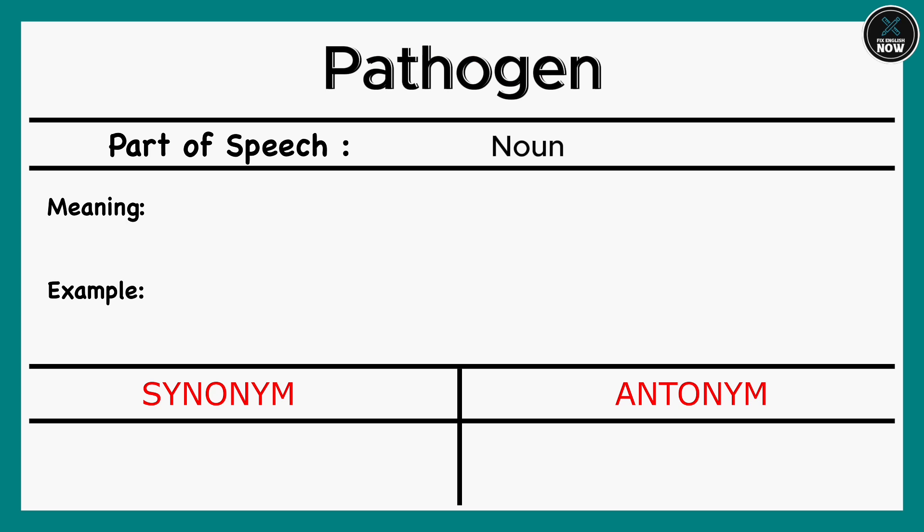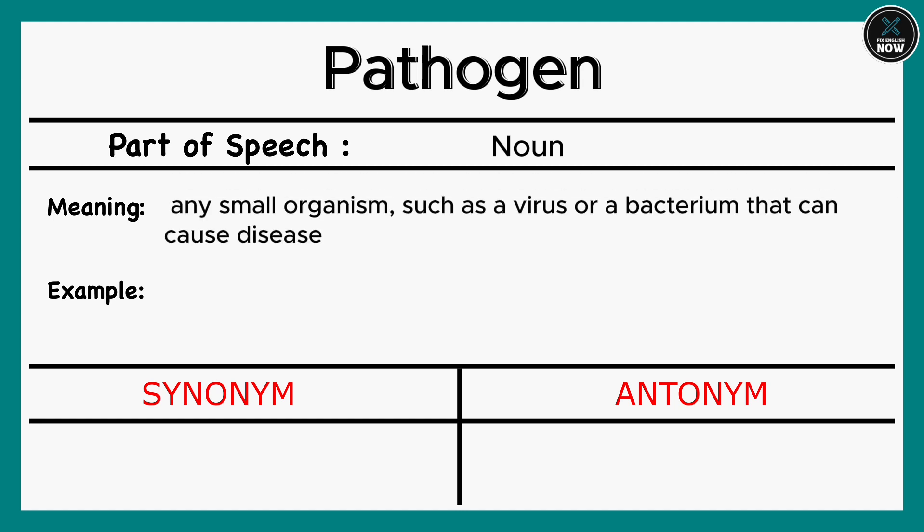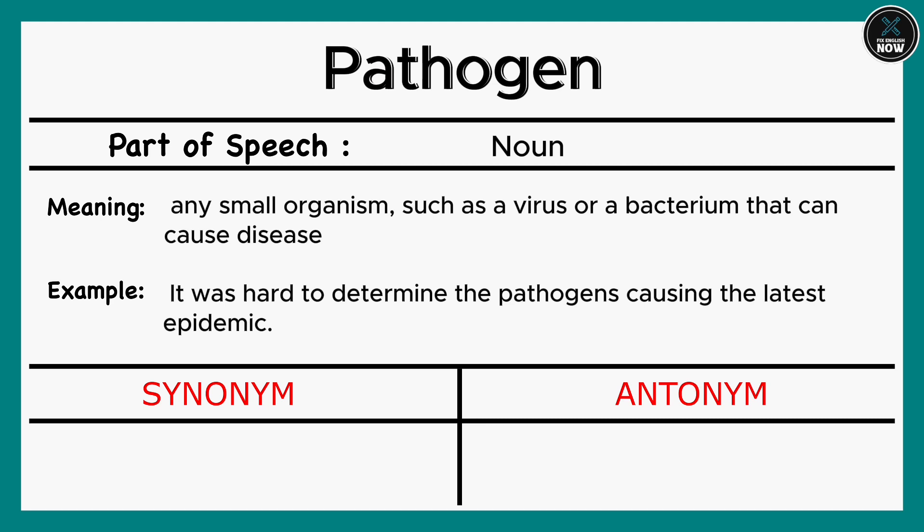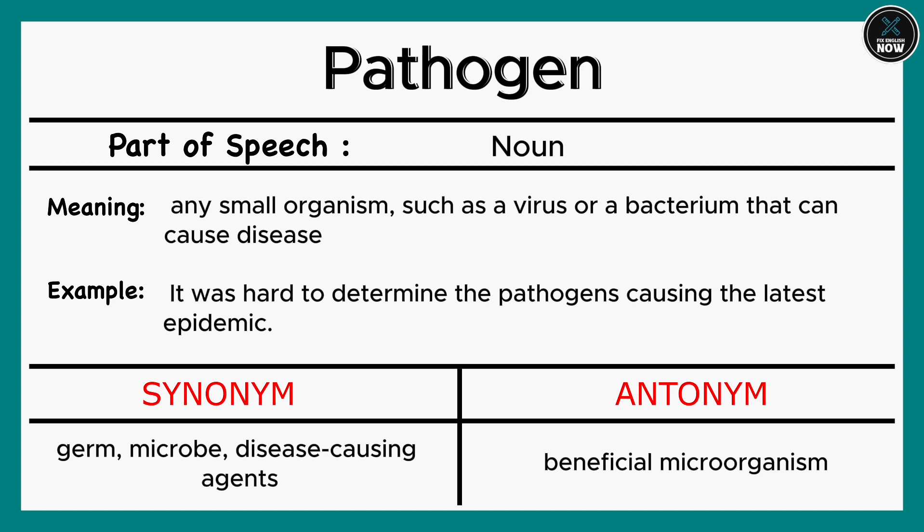Pathogen: Any small organism, such as a virus or a bacterium, that can cause disease. Example: It was hard to determine the pathogens causing the latest epidemic. Synonyms: Germ, Microbe, Disease-causing agents. Antonym: Beneficial microorganism.